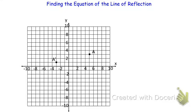In this video, we'll look at how to find the equation for a line of reflection. Here we have two points, A and A'. A is the original pre-image, and A' is the new image point. We know that A is the original because A' has the apostrophe. The apostrophe means this is the first transformation of point A.